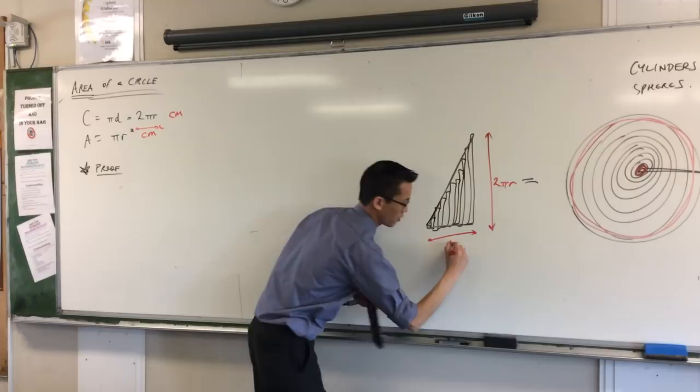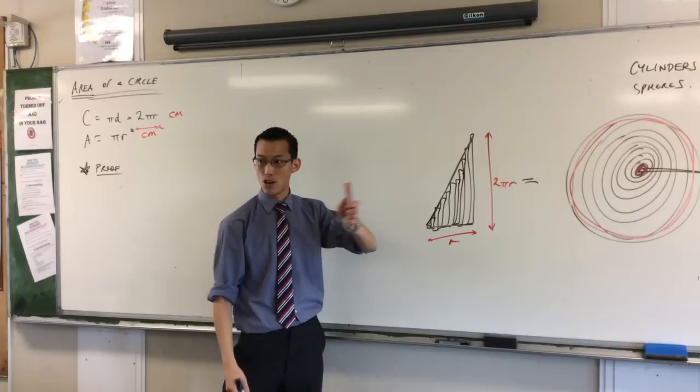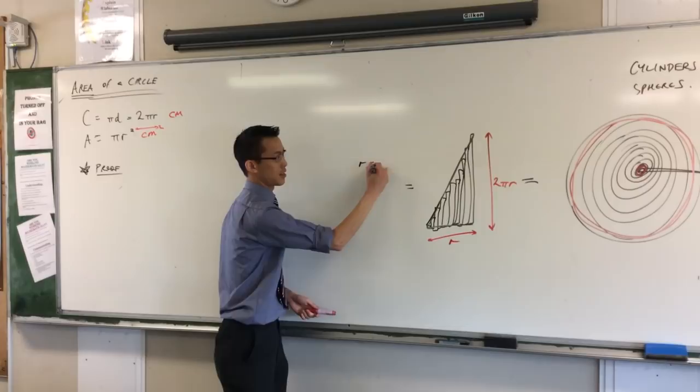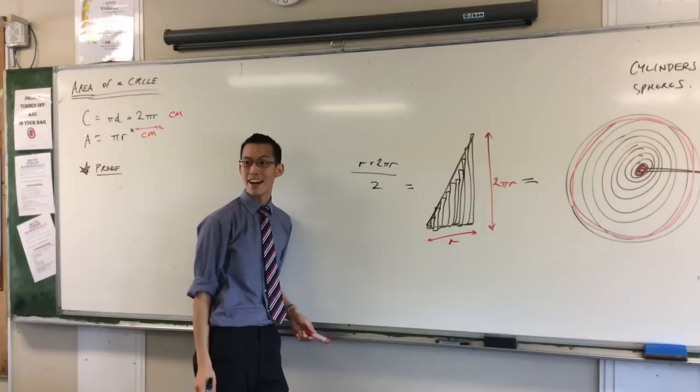Now this is just a triangle, and I know what its base is and I know what its height is. Its area is going to be base times height over 2. The 2's cancel, and that leaves you with the familiar result pi r squared.